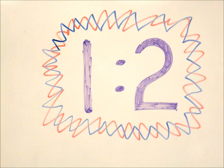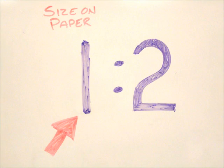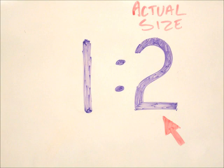We need to make a note on our title blocks of the scale we're using so the person reading it knows how much bigger or smaller the object is in real life. We show the scale like this. The number on the left shows the length of a line on paper. The number on the right represents the same line on the actual object.